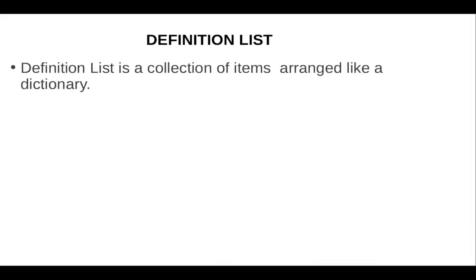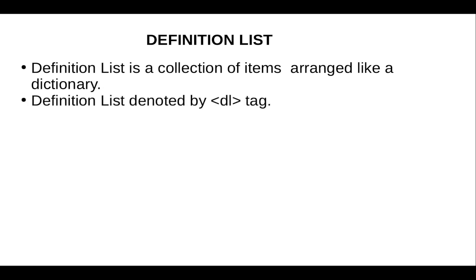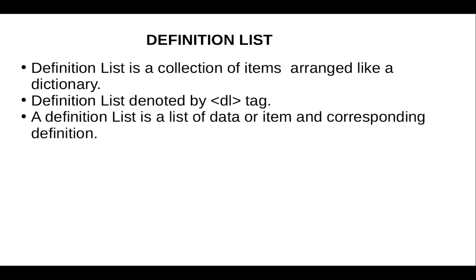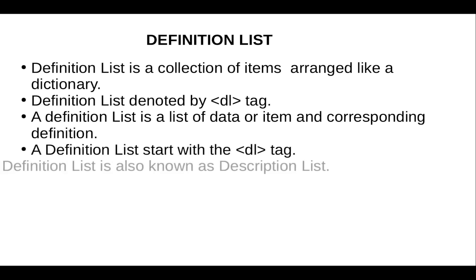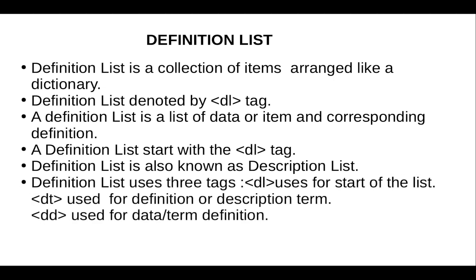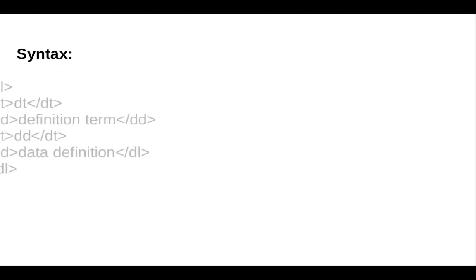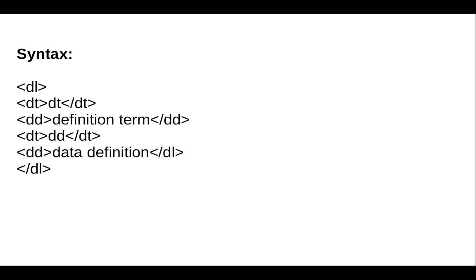The next topic is the definition list. A definition list is a collection of items arranged like a dictionary. It is denoted by the dl tag and is also known as a description list. It uses three tags: dl (start of the list), dt (definition term), and dd (data definition). Syntax: open the dl tag, then use dt for the term and dd for the definition, then close dl.